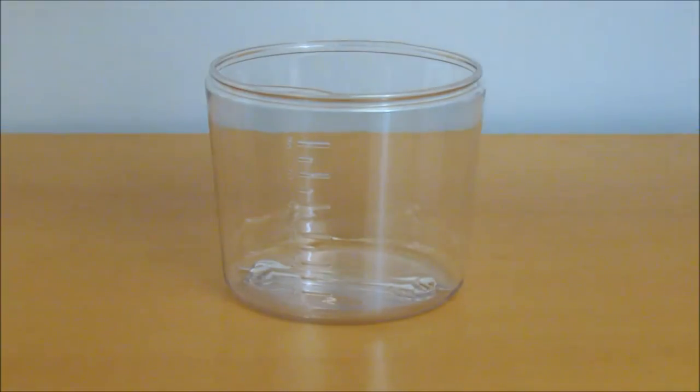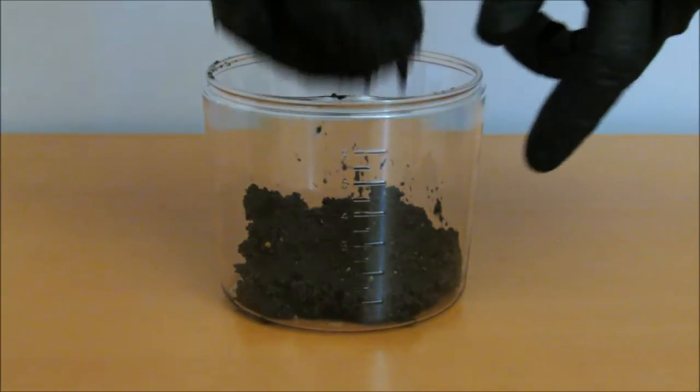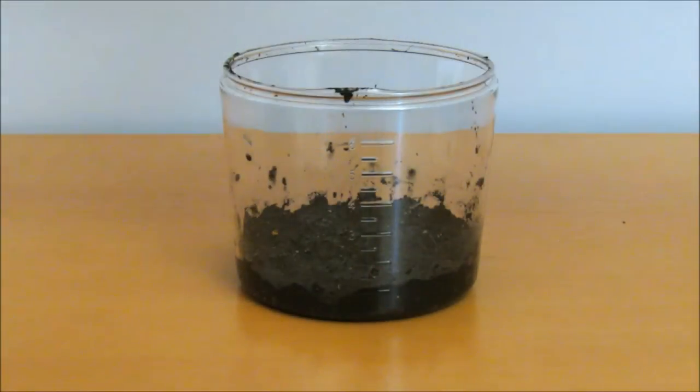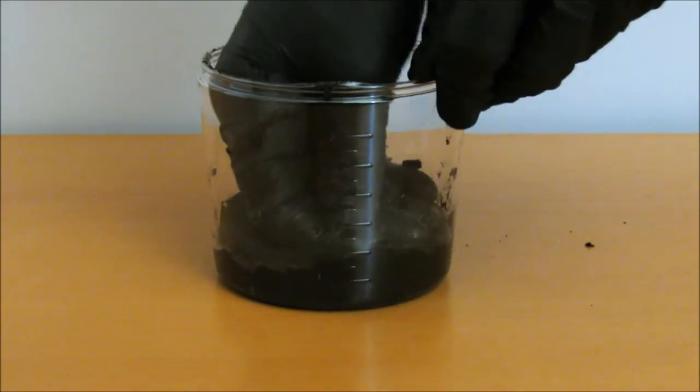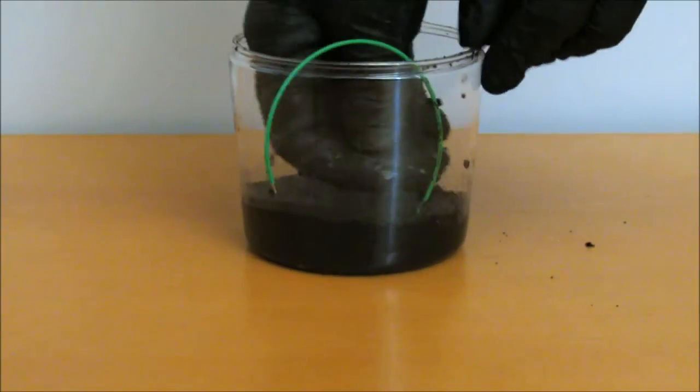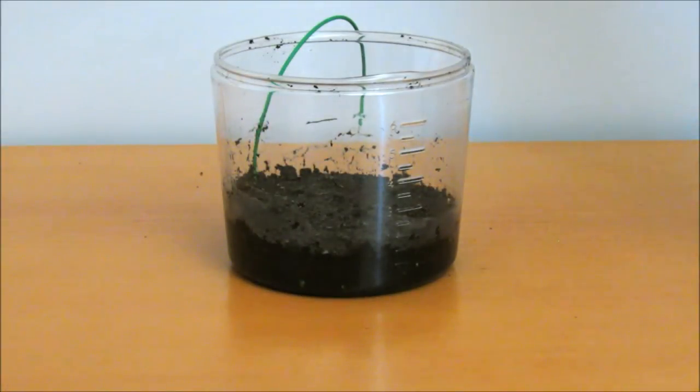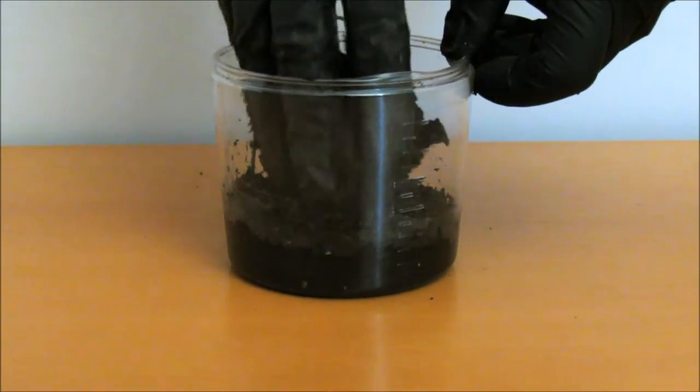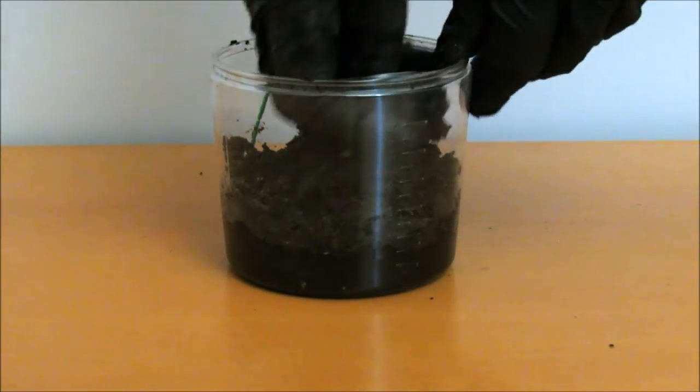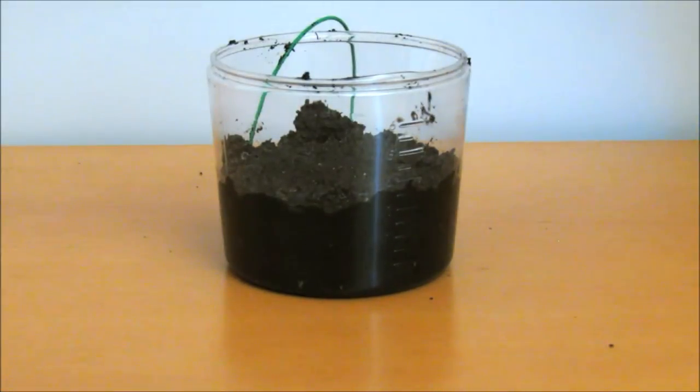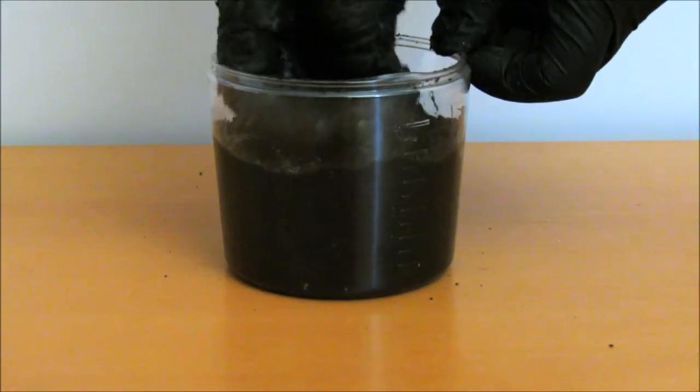Now it's time to feed our MudWatt. Add mud to your container to roughly the 1cm line and pat down to make a smooth surface. Place the anode on the mud layer. Press down firmly, squeezing out any air pockets. Add more mud. Like last time, pat down for a smooth surface.